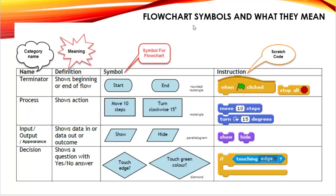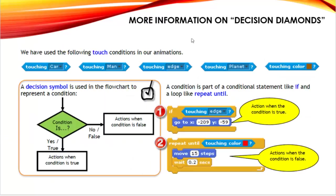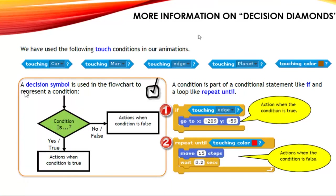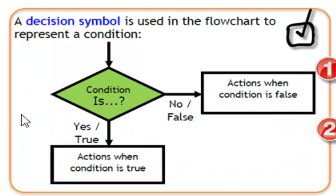I will talk more about the diamond positions in this slide. We use several touch conditions in our animation in Scratch. For example, touching another sprite, touching the edge, touching another object like another sprite, or touching a color. Now this box is very important, you have to learn.